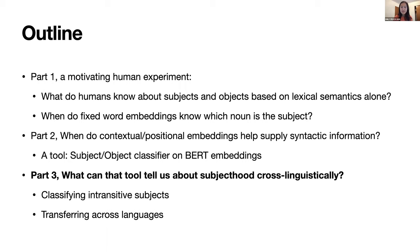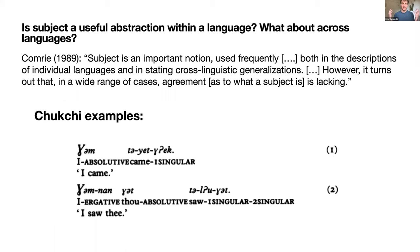We're thinking about what we're actually doing when we classify subjects and objects, and the bigger question of what we're talking about when we talk about subject. Kalamri points out that subject is an important notion used frequently in descriptions of individual languages and cross-linguistic generalizations. However, in a wide range of cases, agreement as to what a subject is is lacking.